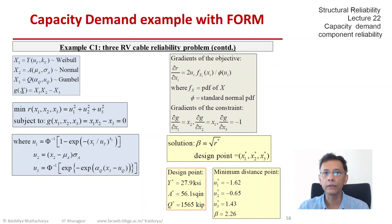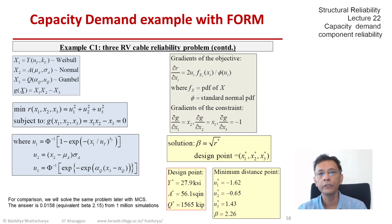Now, how accurate is this 2.26, beta of 2.26? We have mentioned that FORM is approximate. So to compare, we later have solved this problem using Monte Carlo simulations with a good number of trials, and we get the value of PF of about 0.0158, which gives an equivalent beta of about 2.15. So it seems that FORM is overestimating reliability or underestimating the PF, and this is something we will remember when we take up a discussion of SORM later in this lecture.